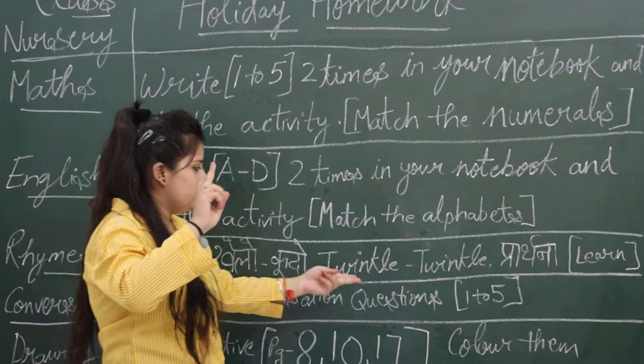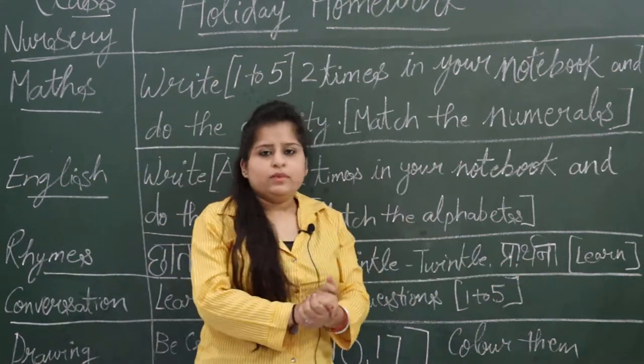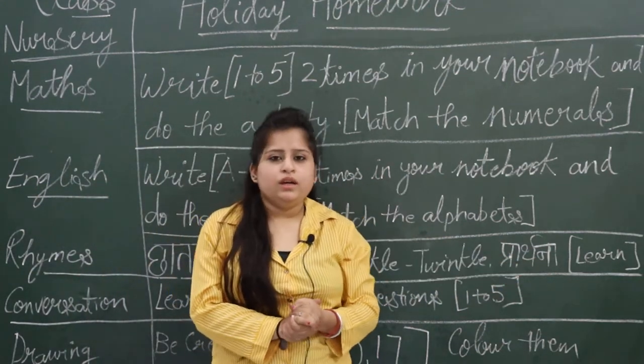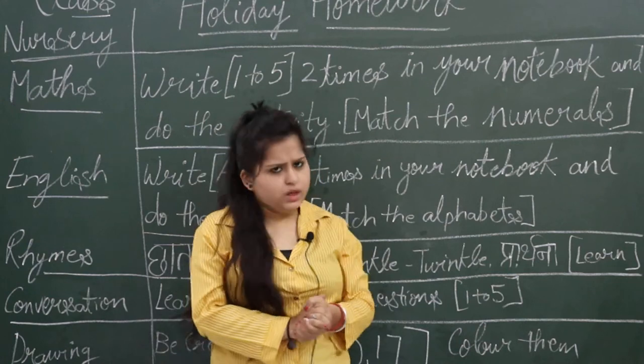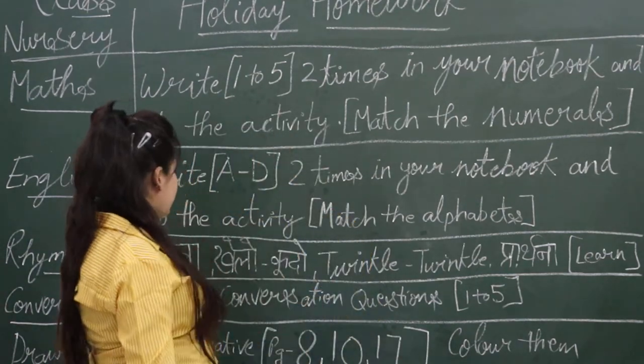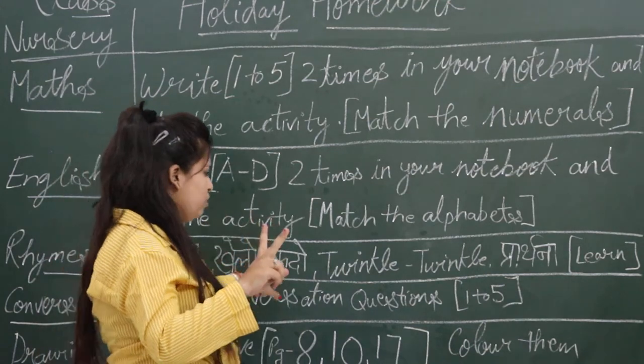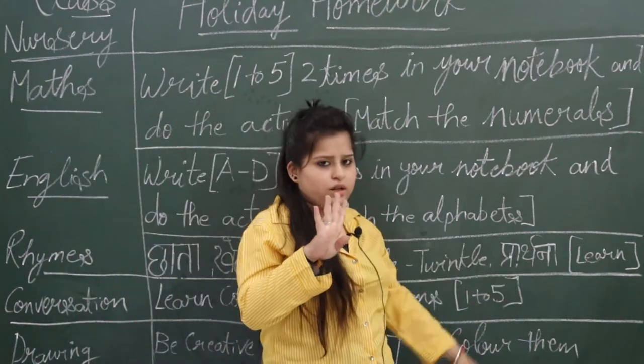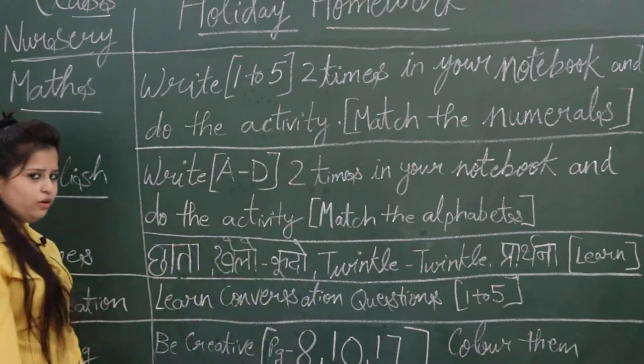Next, rhymes. Chhata, Khelo Kudo, Twinkle Twinkle, Pratna. These four rhymes we have done. So you have to learn them too. Four rhymes: Chhata, Khelo Kudo, Twinkle Twinkle, Pratna. Three of Hindi and one of English.